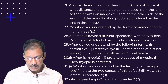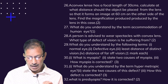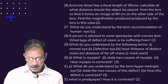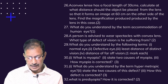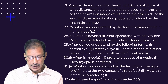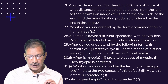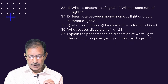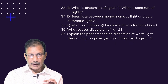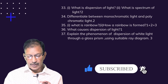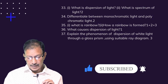What do you understand by the term accommodation of the eye? A person is advised to wear spectacles with a convex lens — what type of defect of vision is he suffering from? What do you understand by the following terms: normal eye, defective eye, least distance of distinct vision, distance of far vision? What is myopia? State the two causes of myopia and how myopia is corrected. What do you understand by hypermetropic eye? State the two causes of this defect and how it is corrected. What is presbyopia and how is it corrected? What is dispersion of light? What is the spectrum of light? Differentiate between monochromatic and polychromatic light. What is a rainbow and how is a rainbow formed? What causes dispersion of light? Explain the phenomenon of dispersion of white light through a glass prism using a suitable ray diagram.